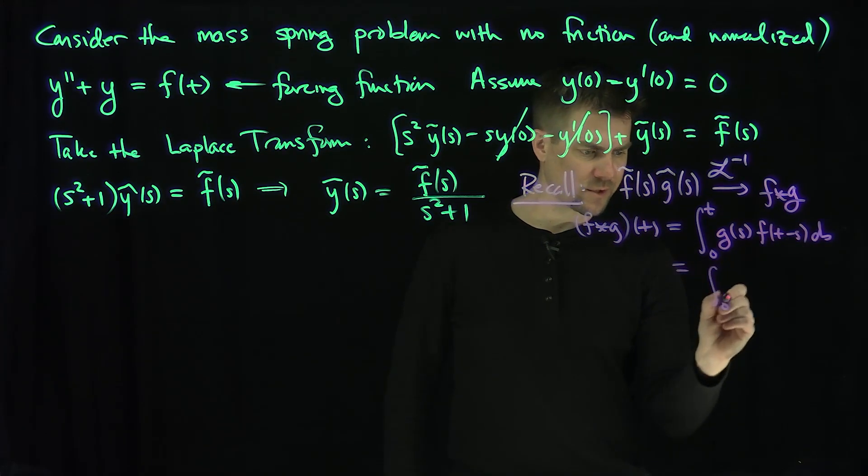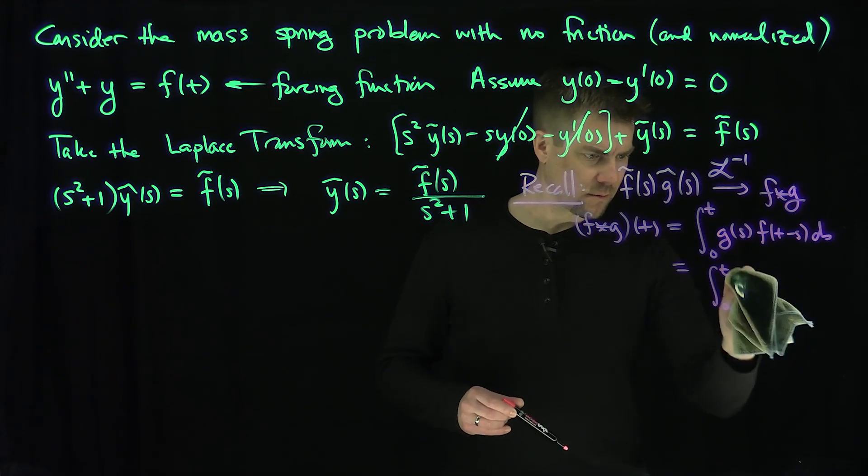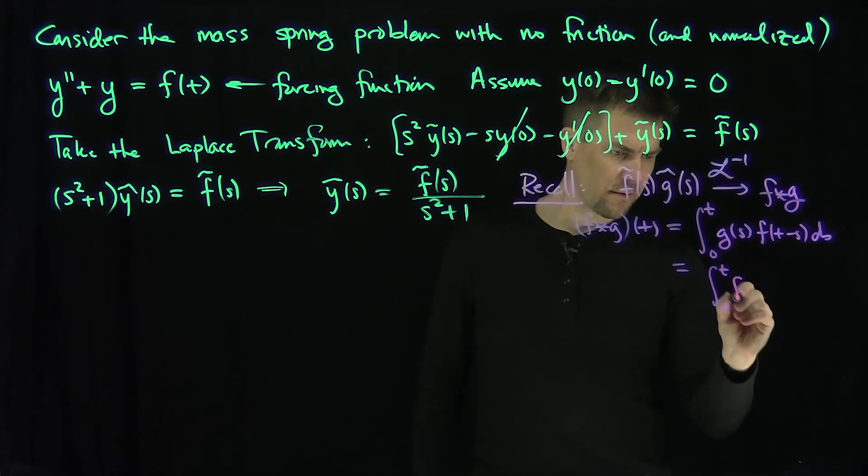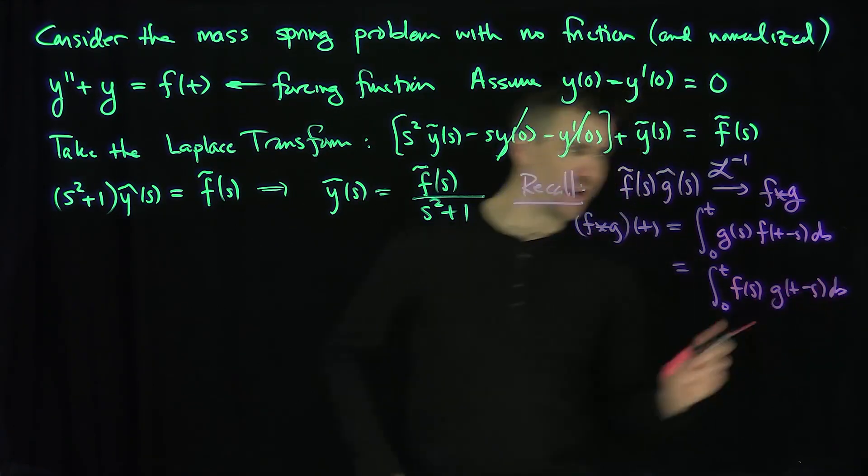And it's commutative. So this is the integral from 0 to t of f of s and then g of t minus s, ds. Great.